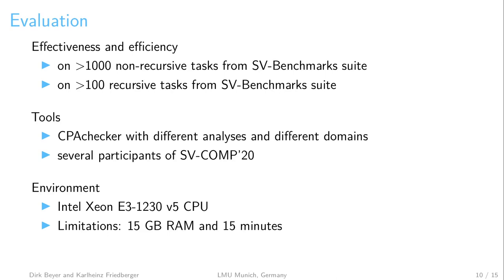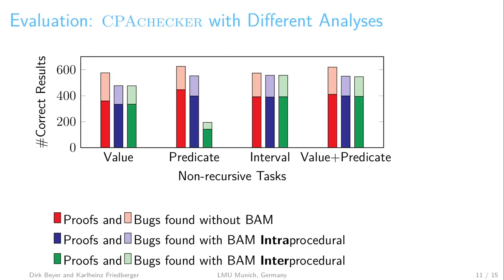The first part of the evaluation is a comparison within CPA Checker of three different analyses across four different domain configurations: value domain, predicate domain, interval domain, and a combination of value and predicate. You can see that the green plot — proofs and bugs found by BAM Interprocedural, which corresponds to our approach — is in nearly all cases as good as the existing analysis. For the predicate domain, we got fewer results due to an unmatching interpolant that caused expensive unrolling of loops, but this does not correspond to procedure summaries. This plot shows the results for non-recursive tasks.